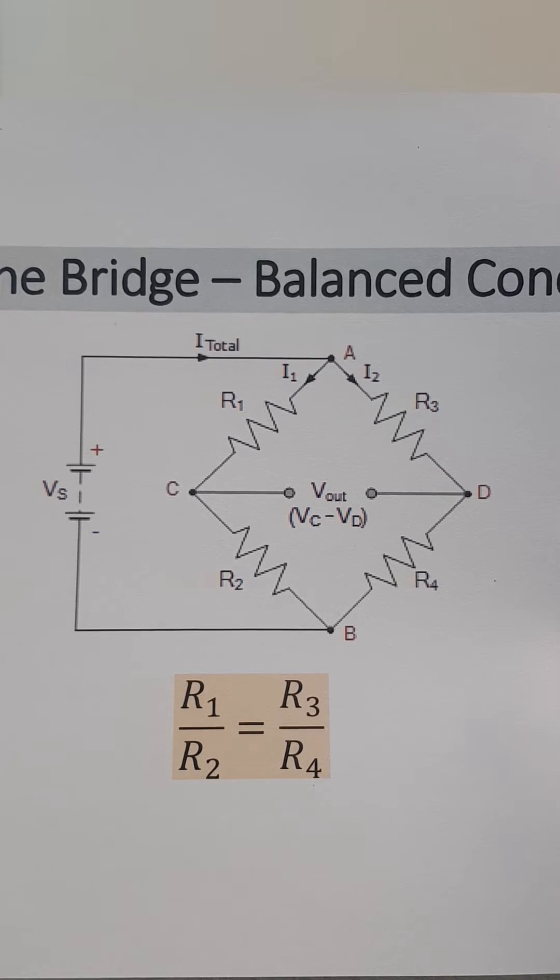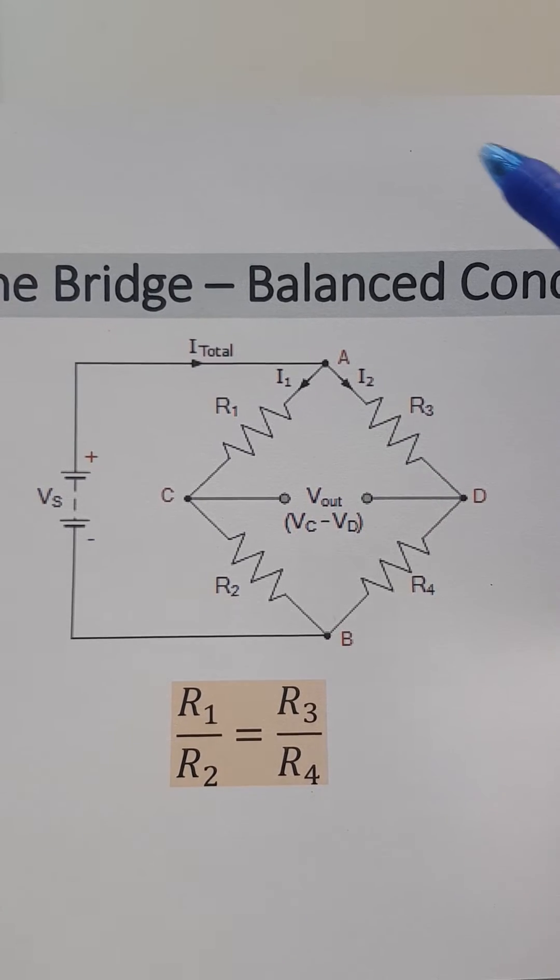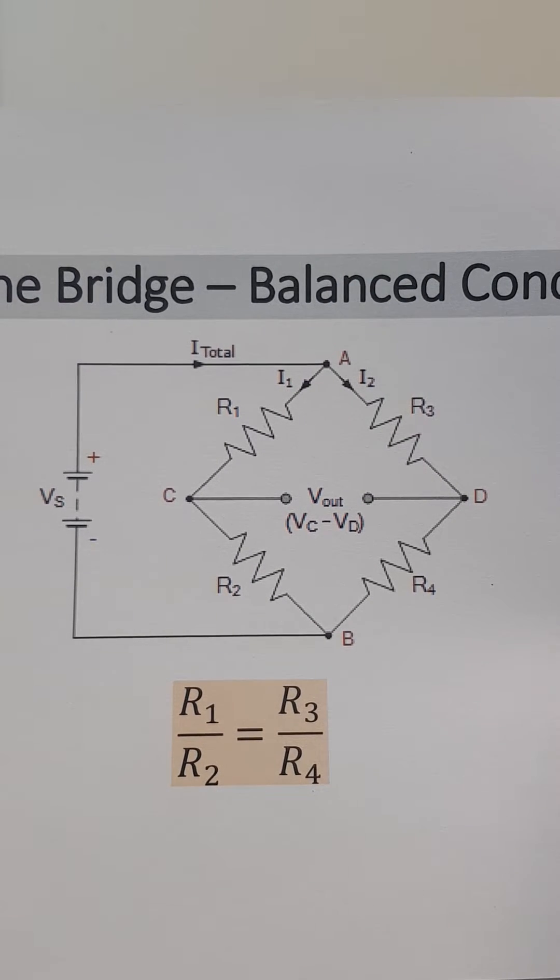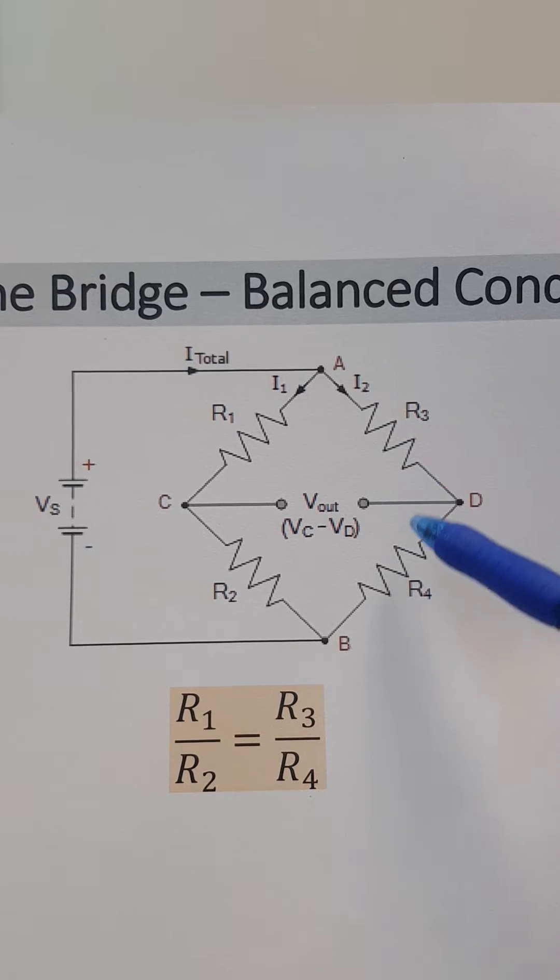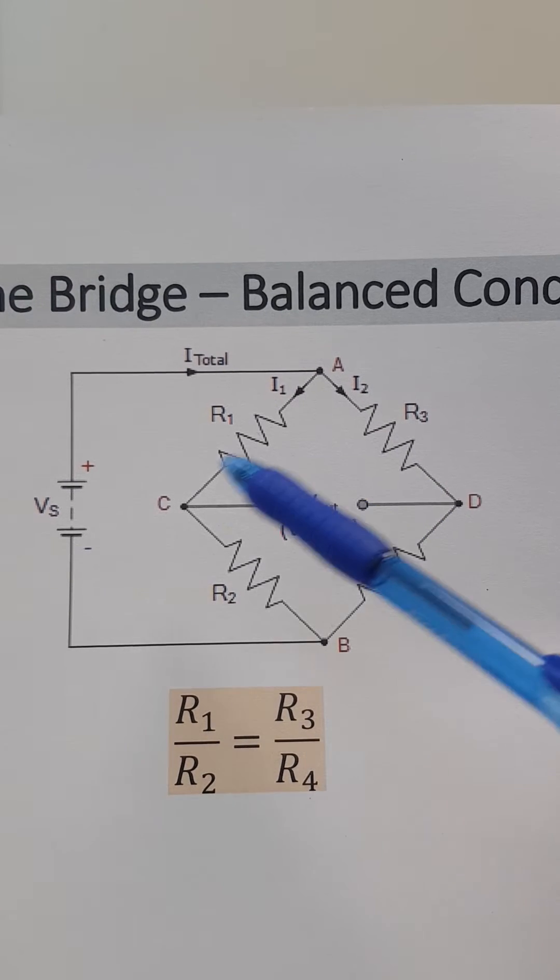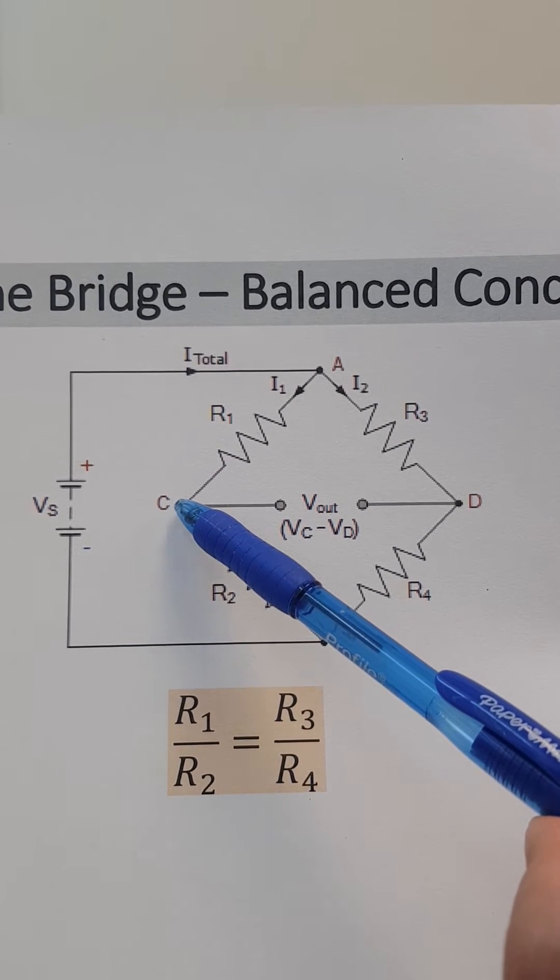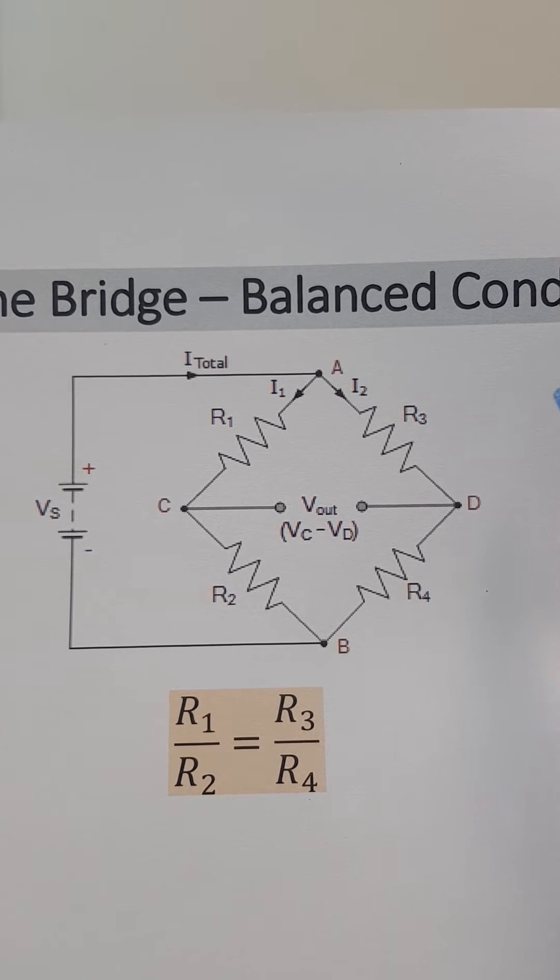Now, the Wheatstone bridge works in two different modes. One we call it the balance mode. The balance mode when R1 over R2 is equal to R3 over R4, then the voltage between point C and point D is equal to zero.